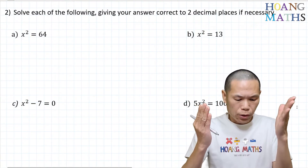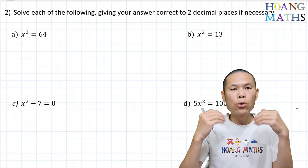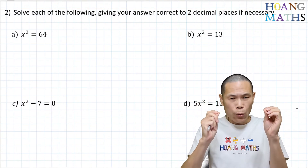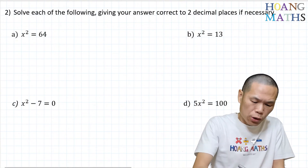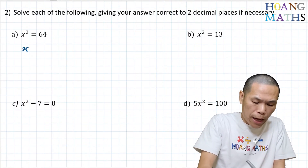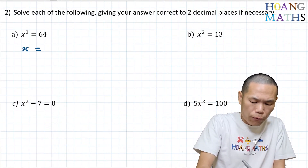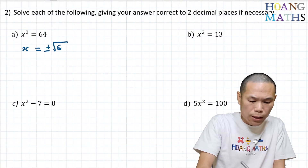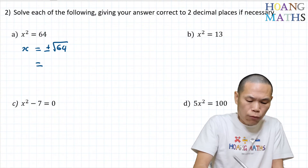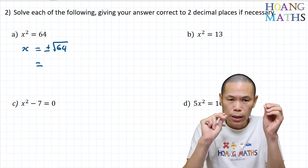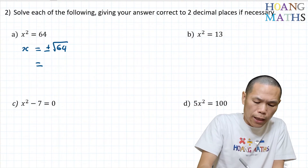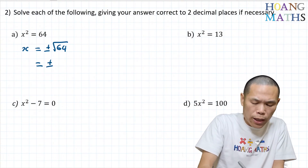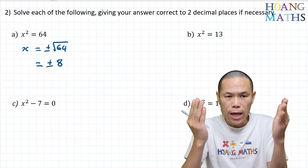Practice solution, part a: x squared is equal to 64. The opposite of square is square root, so we take square root on both sides. Square root of x squared gives me x, and we need plus or minus square root of 64. The square root of 64 is 8, so you should get x equals positive 8 or negative 8.